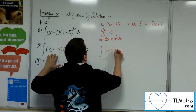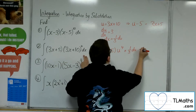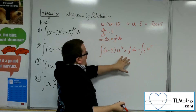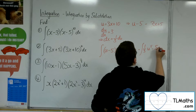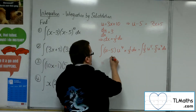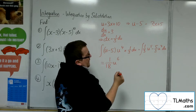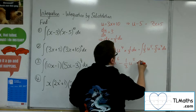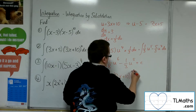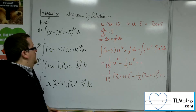So we have the integral of u minus 5 times u to the power of 4, and dx was one third du. Multiplying through, we'll have one third u to the 5 minus five thirds u to the 4. Then we integrate: add 1 to the power, divide by the new power. So one eighteenth u to the 6 minus one third u to the 5 plus c. Substituting u back in: one eighteenth times 3x plus 10 to the 6, minus one third times 3x plus 10 to the 5, plus c. That's the answer to number 2.